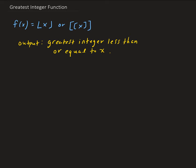Let me provide an example. Suppose we want to evaluate the function at 5.2. Let's think about this with the number line. We have 5.2 on the number line, with 5 on the left and 6 on the right. The output of this function is the greatest integer less than or equal to the argument.